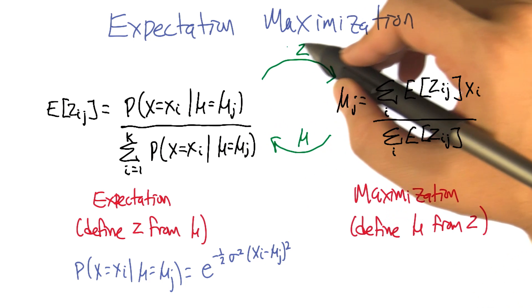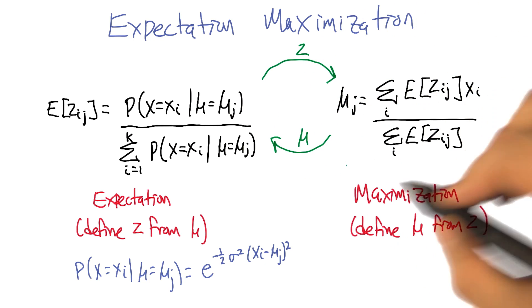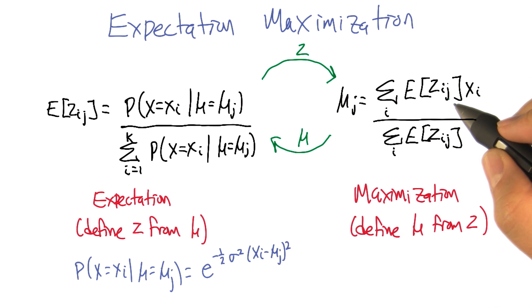We're going to pass that information, that clustering information Z, over to the maximization step. What the maximization step is going to say is, if that's the clustering, we can compute the means from those clusters.